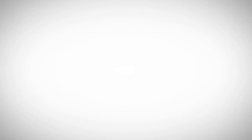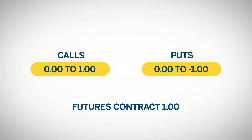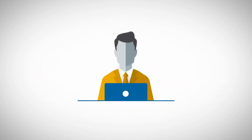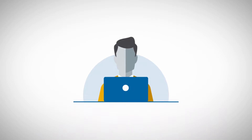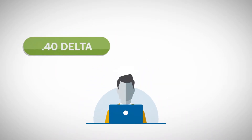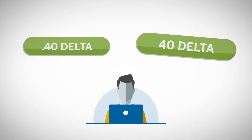Calls always have positive delta between 0 and 1.00, while puts always have negative delta between 0 and negative 1.00. The delta of a futures contract is 1.00. Traders usually refer to the delta without the decimal point, so a 0.40 delta is commonly referred to as 40 delta.